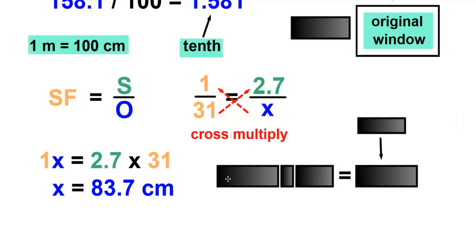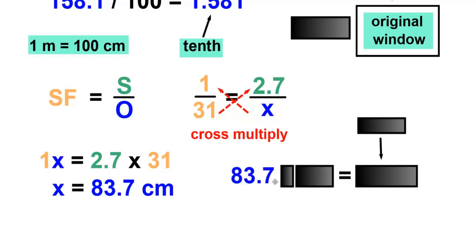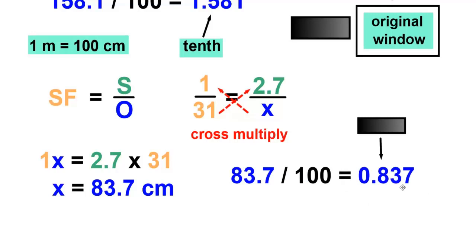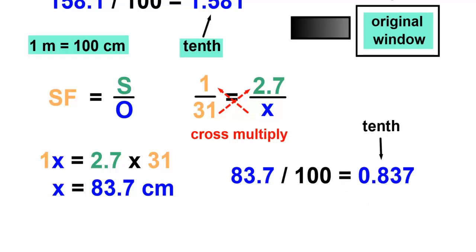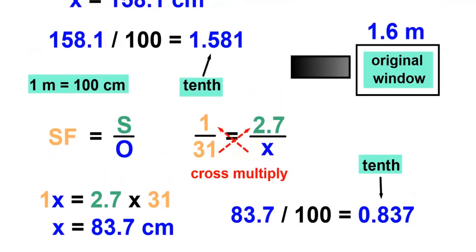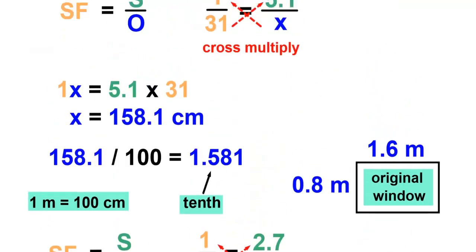2.7 times 31 is 83.7 centimeters. Our answer has to be written in meters, so we'll take the 83.7 centimeters, divide that by 100, and that will give us 0.837 meters. We have to round to the nearest tenth, which is where the 8 is. The number after 8 is a 3, so we'll round down to an 8. The answer will be 0.8 meters.